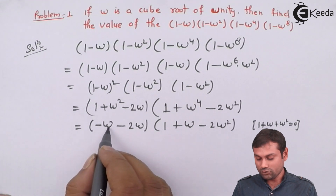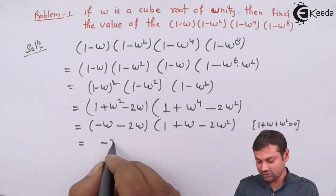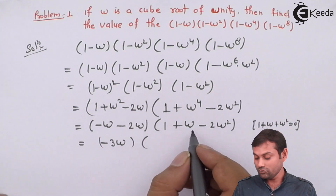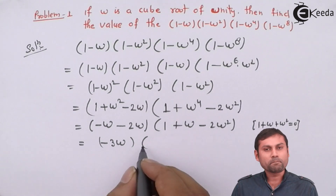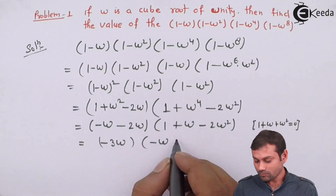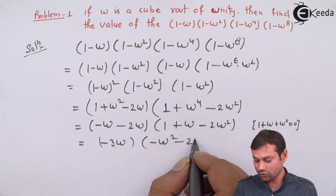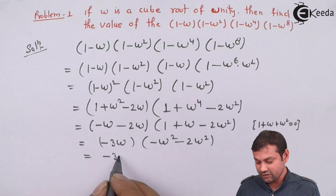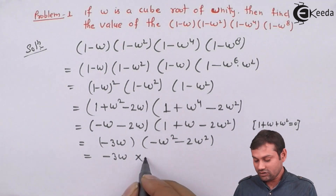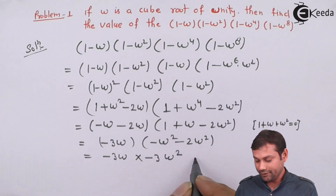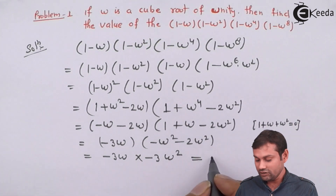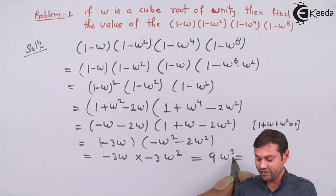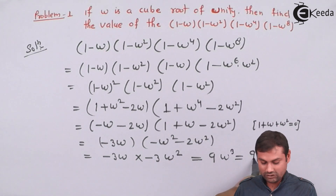Using the property 1 + omega + omega squared = 0: the first bracket becomes minus omega minus 2 omega, which is minus 3 omega. The second bracket becomes minus omega squared minus 2 omega squared, which is minus 3 omega squared. Multiplying: (-3 omega) times (-3 omega squared) = 9 times omega cubed. Since omega cubed equals 1, the answer is 9.